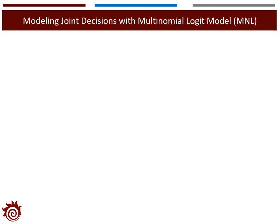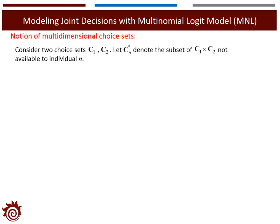The nested structure is applied for the multi-dimensional choice problem. We will first check the notations to be applied for the multi-dimensional choice. Let's consider two choices, C1 and C2. Then the complete combination of choices will be C1 times C2. If we consider an individual n, there will be a subset of choices not available for that individual, that is Cn star. Then the combination of choices available for individual n would be defined as Cn, that is C1 times C2 minus Cn star.